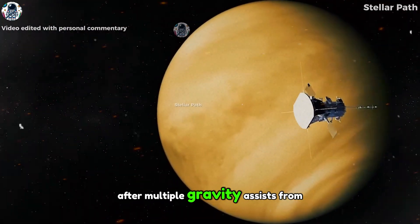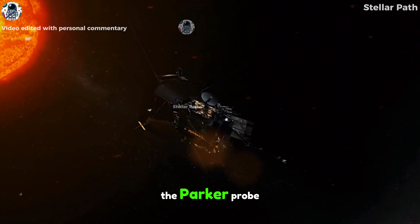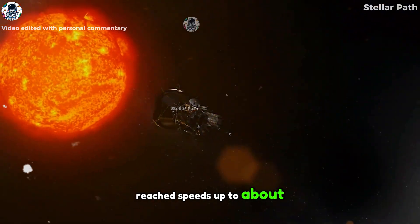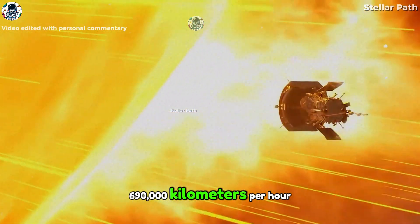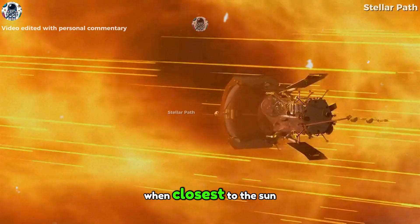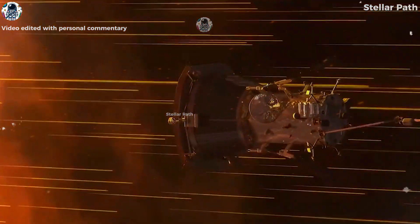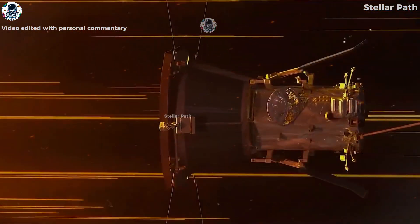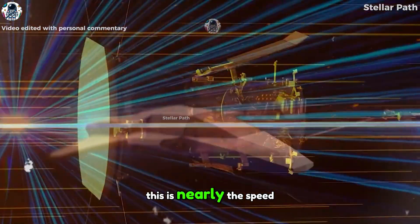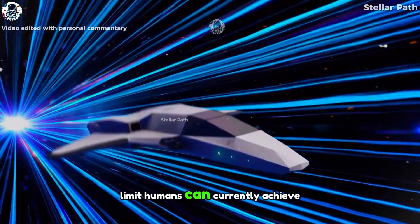After multiple gravity assists from Venus, the Parker Probe reached speeds up to about 690,000 kilometers per hour when closest to the Sun, which is about 0.060% of the speed of light. This is nearly the speed limit humans can currently achieve.